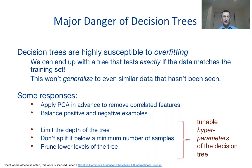A major danger of decision trees is the susceptibility to overfitting. We can make a very detailed decision tree with many split points, getting to very small leaf nodes, and have basically all predictions be perfect on the training set. However, that doesn't necessarily mean we will have the same results out of sample.